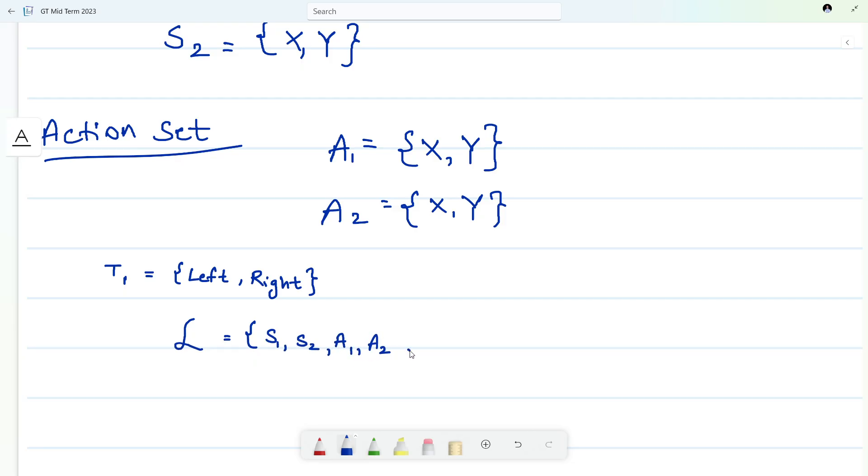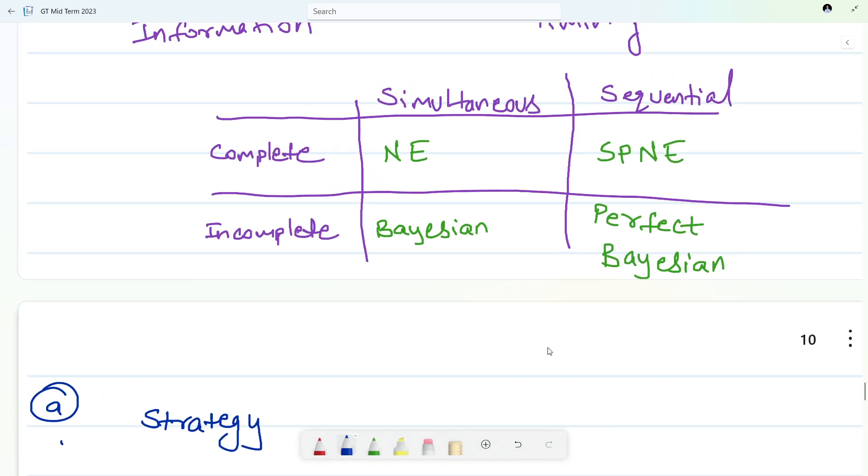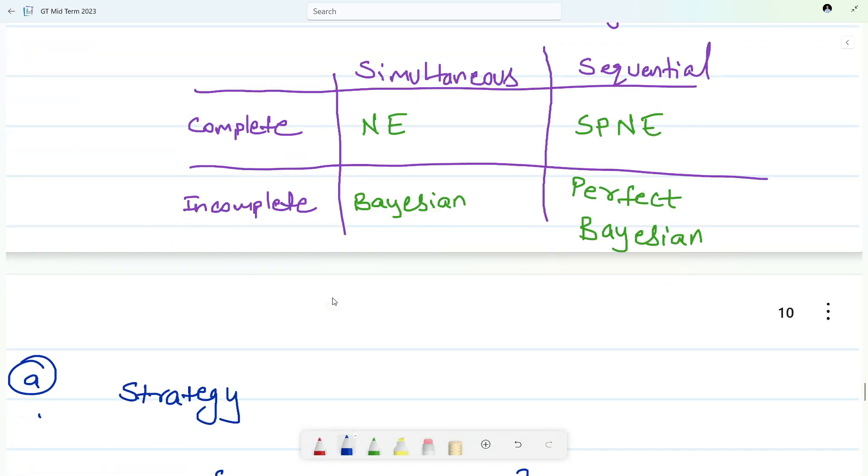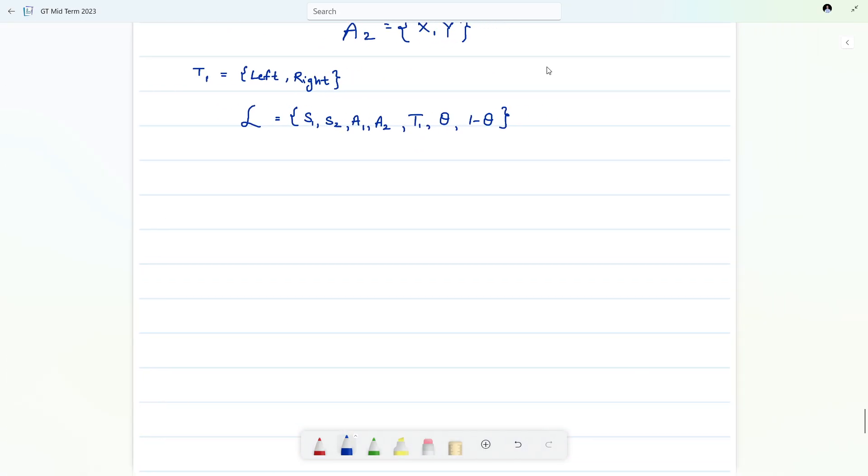It's that simple. We are done with the part, three marks confirmed. Now we have to find the Bayesian Nash equilibrium. It is very simple again. Let me show you the solution.